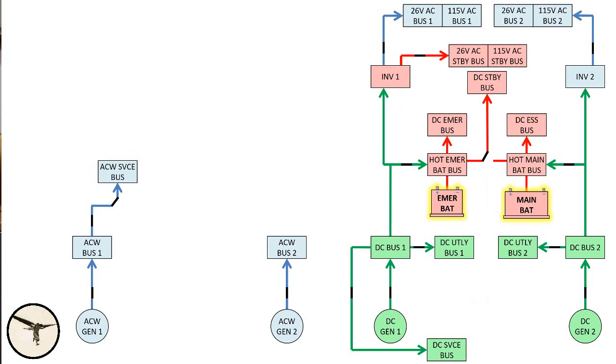The AC wild electrical system has the same redundancy as the DC electrical system. When one generator is offline, the other generator powers both main AC wild buses. But in that case, the AC wild service bus is shed because the generators have limited capacity.